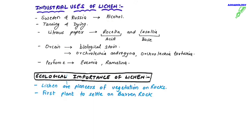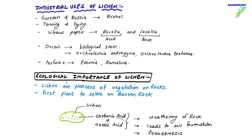Lichens have a very important ecological role — they are the pioneers of rock vegetation. In deserts where no plant growth is possible, lichens are the first to settle on barren rock. When they grow on rock, they secrete acids like carbonic acid and oxalic acid, which corrode the rock and result in weathering. The rock breaks into small pieces, leading to soil formation. This process of soil formation by lichens is called pedogenesis.